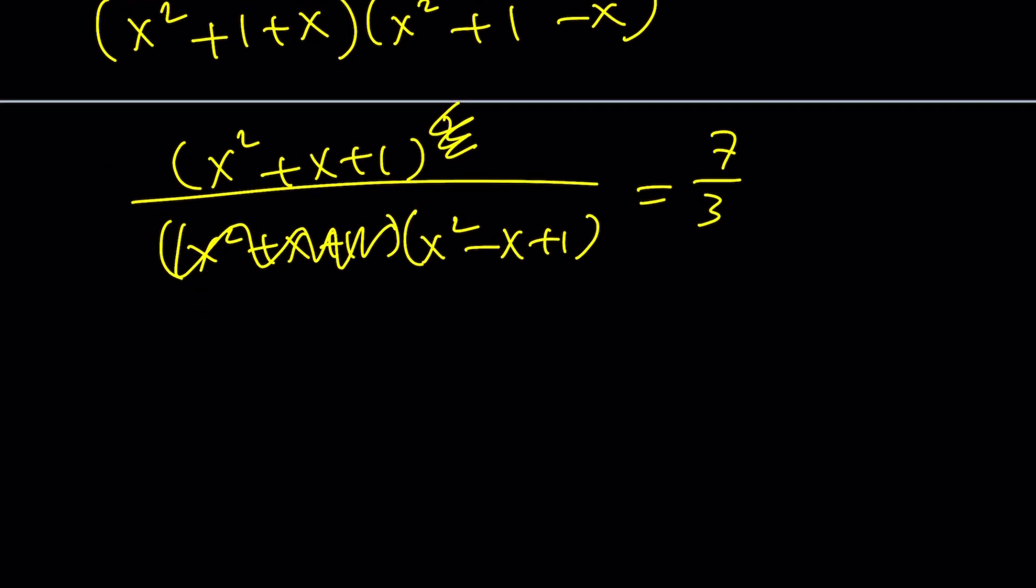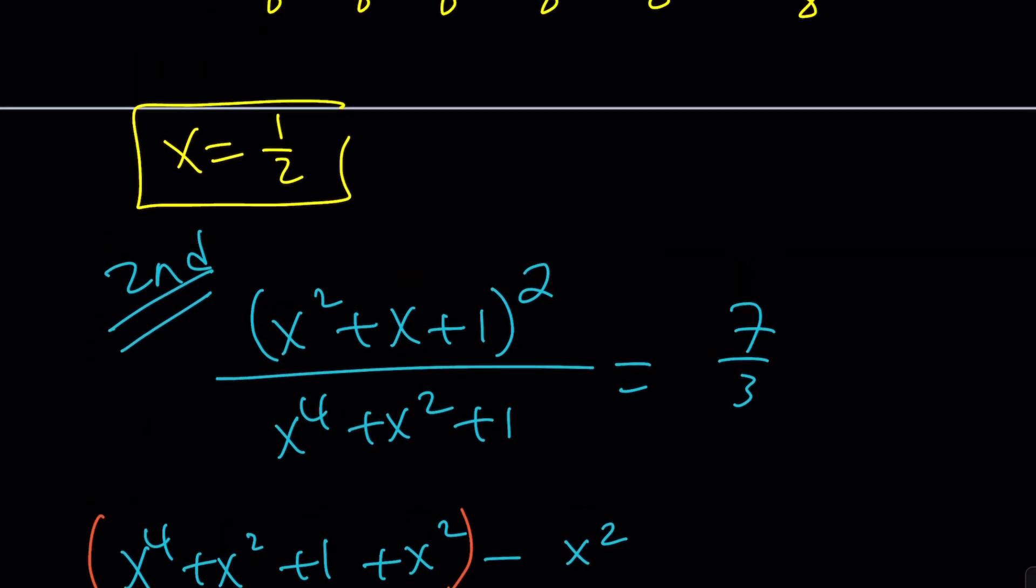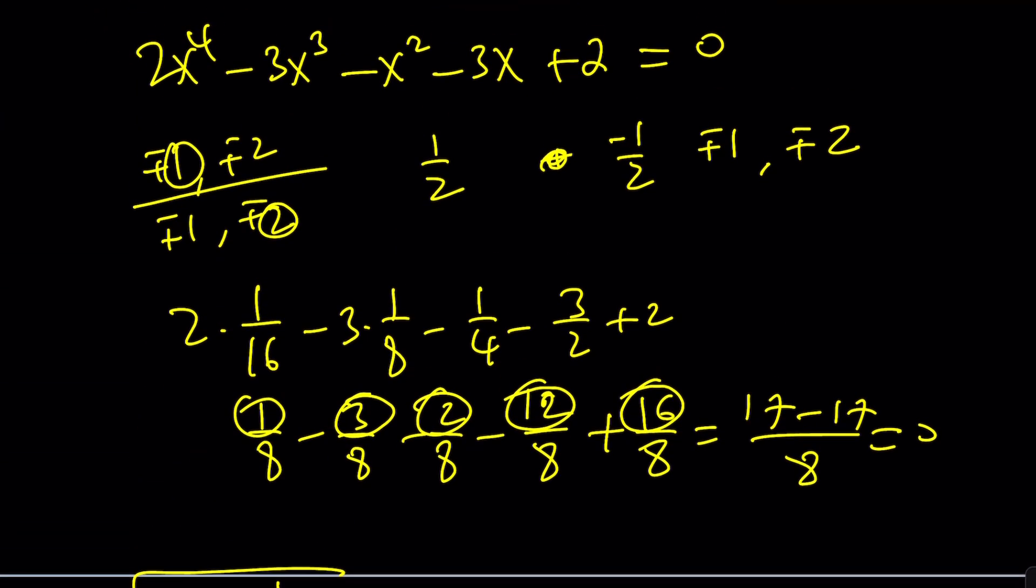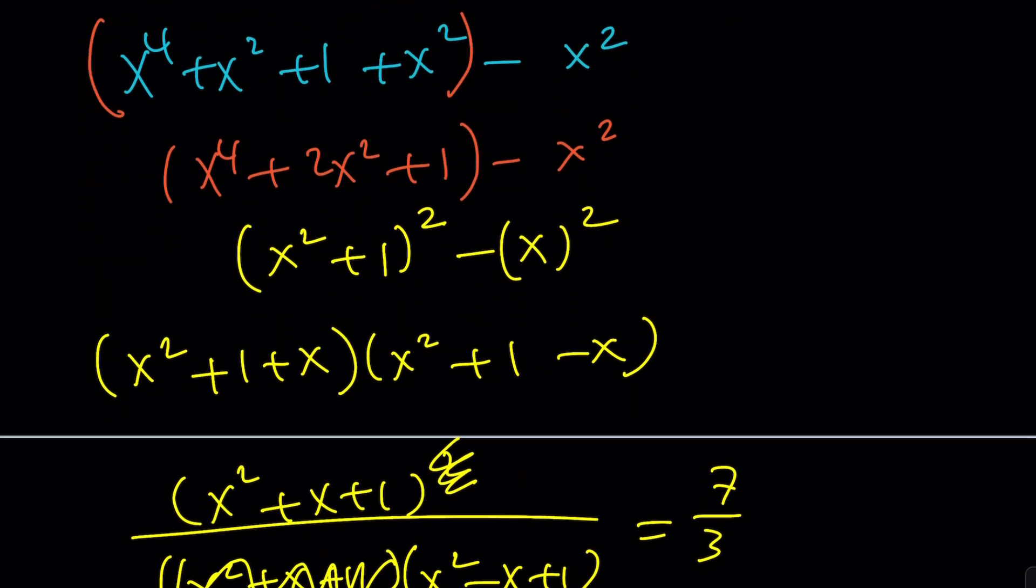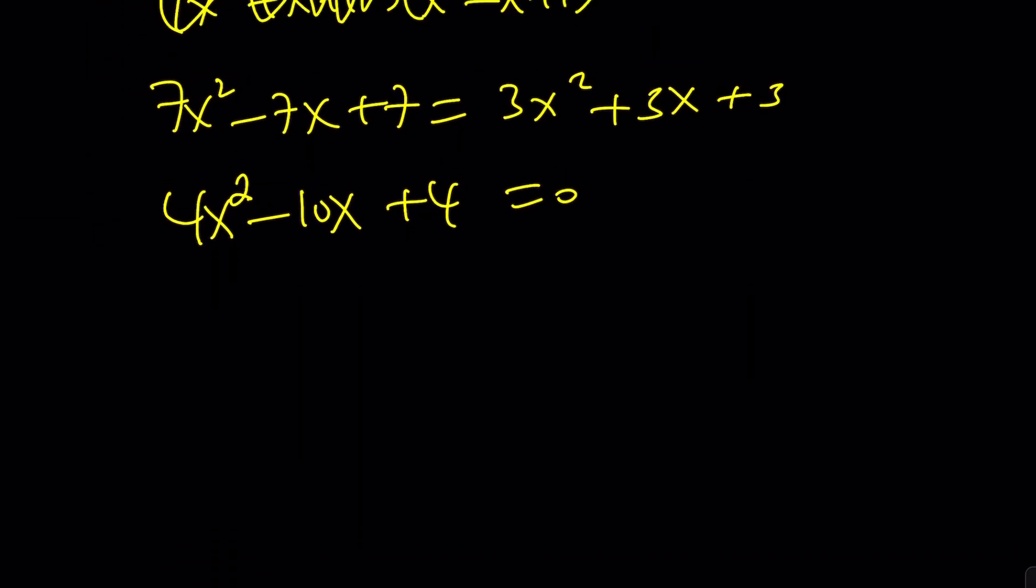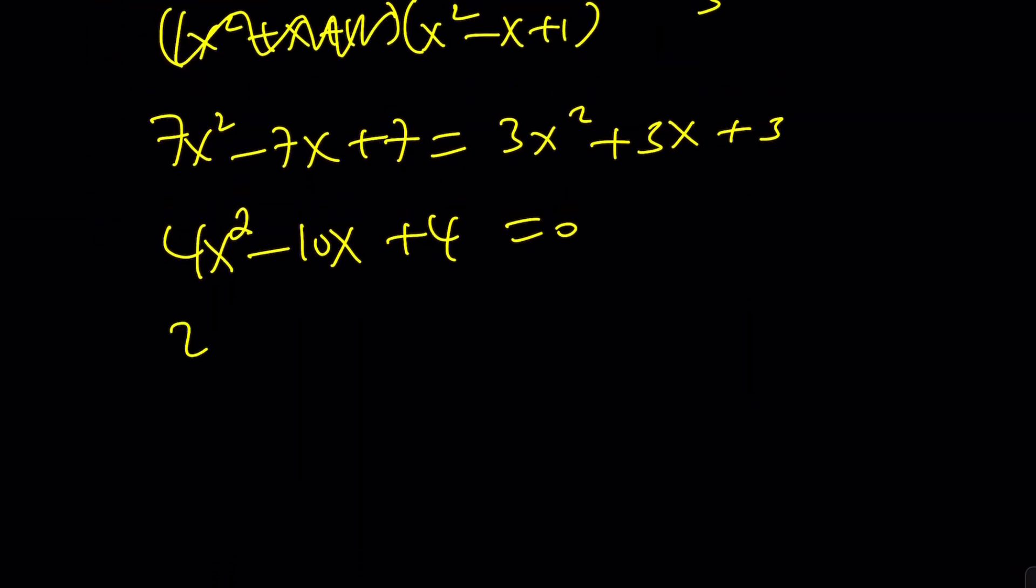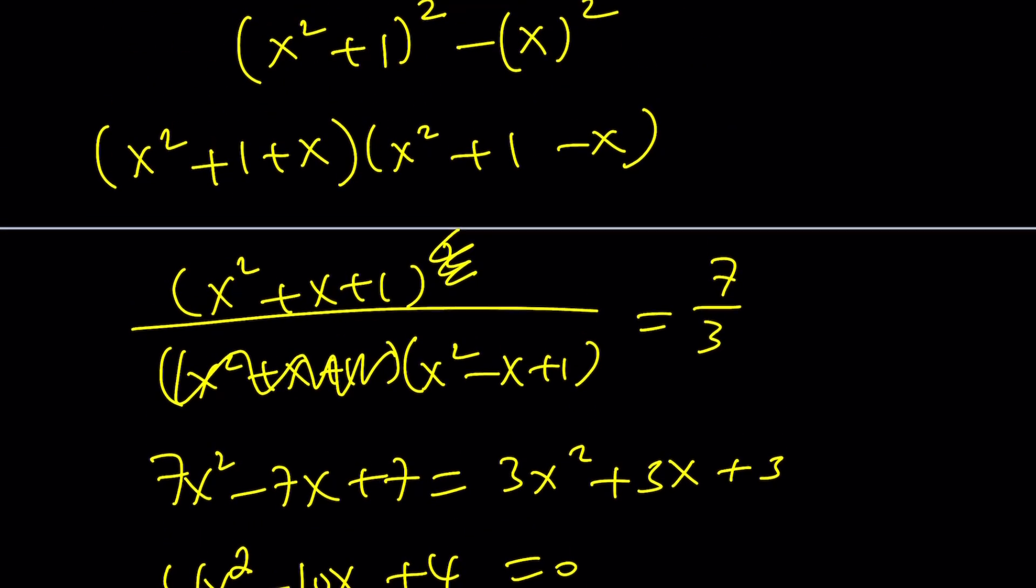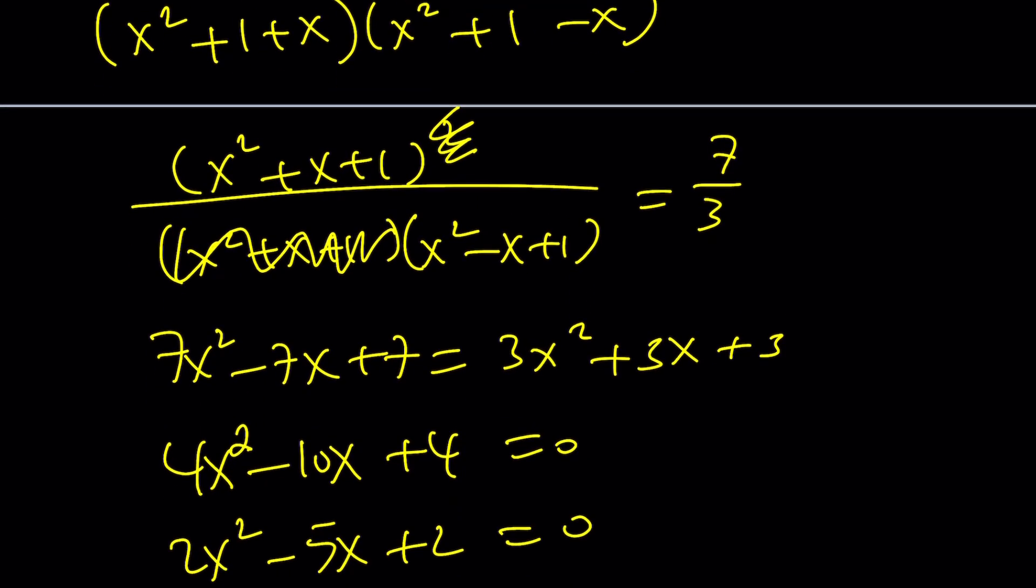Great. Let's go ahead and cross multiply. 7x squared minus 7x plus 7 equals 3x squared plus 3x plus 3. Put everything on the same side. 4x squared minus 10x plus 4 equals 0. It kind of looks like the first approach where we divided everything by 2, but that was a quartic. And solving it obviously was more laborious. This one is fairly easy. Divide everything by 2 just to get smaller numbers. And then this is your equation.